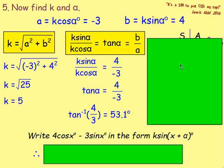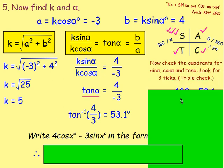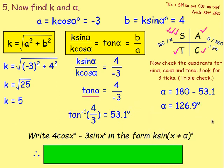From there, we need to work out the quadrants using CAST. We've got k cos α which is negative — cos is negative in S and in T. We've got k sin α which is positive — sin is positive in A and in S. So we've got two ticks for S. Check with a third tick using tan: tan α is negative four thirds, so tan is negative in C and in S, giving three ticks for S. So the angle is 180 minus 53.1, which gives 126.9 degrees.